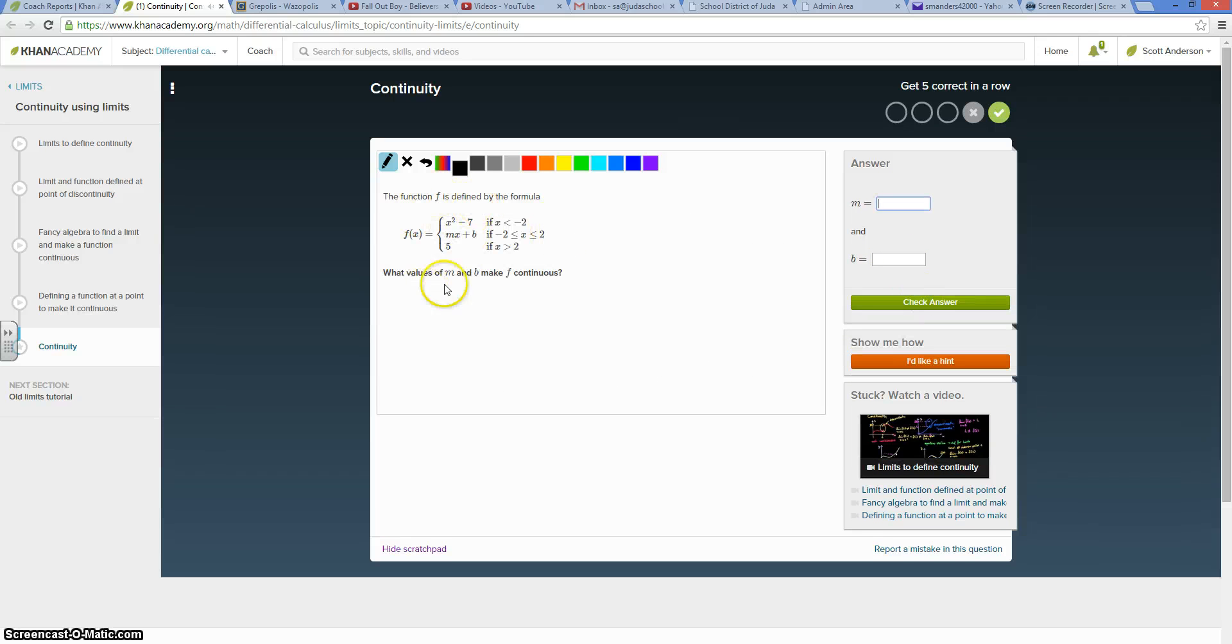So again, they're just asking you to find these values here to make it continuous. So this one is not so hard. Mx plus b has to equal 5 at 2, this side, and x squared minus 7 has to equal Mx plus b at negative 2. Two equations, two unknowns. Keep practicing, see if that helps ya.